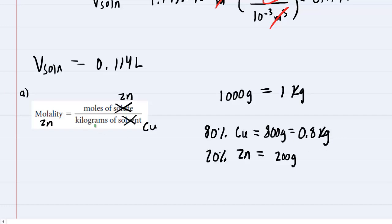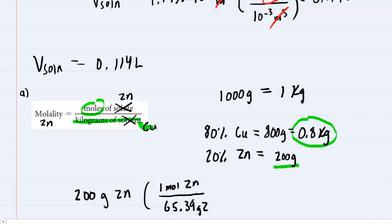The kilograms of our copper solvent equals 0.8, and we can take the 200 grams of zinc and convert it into moles. From the periodic table, one mole of zinc has a mass of 65.39 grams. When you perform this division, 200 divided by 65.39, you get about 3.06 moles of zinc.